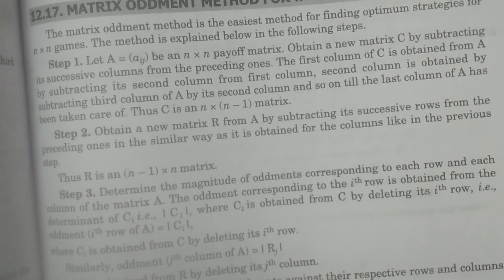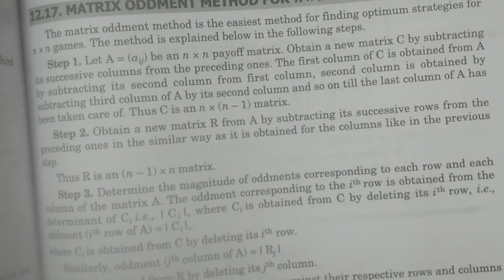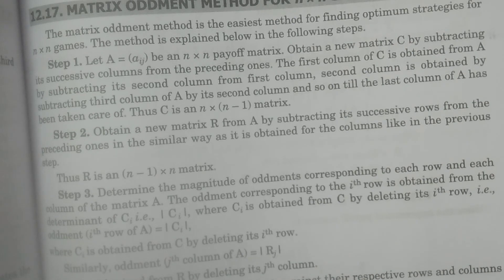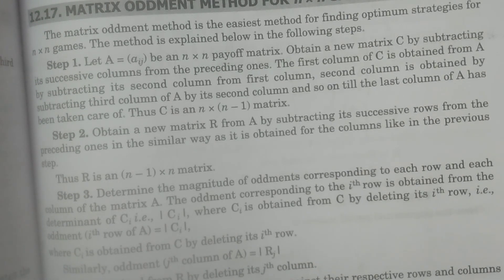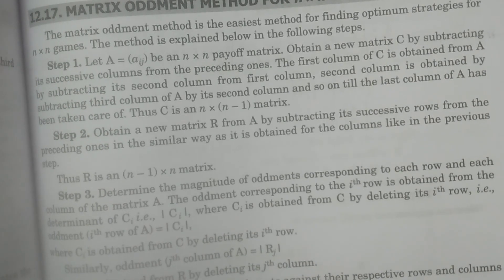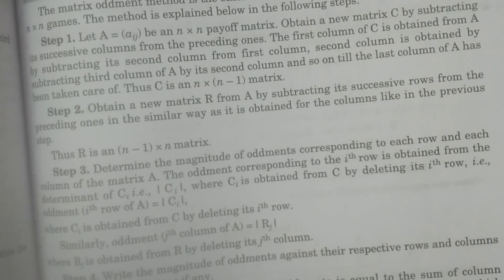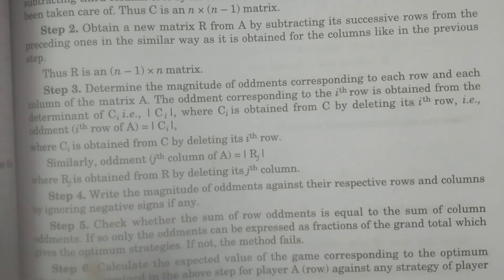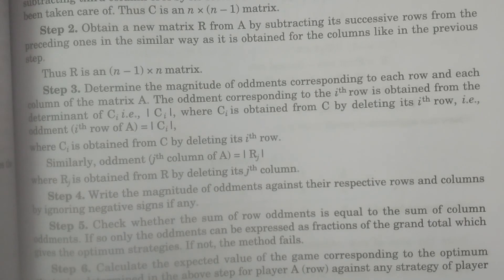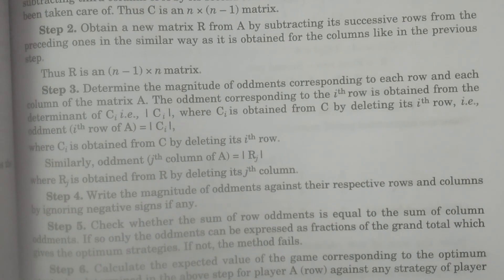Write the magnitude of oddments against their respective rows and columns. The magnitude is simply the absolute value — after calculating the determinant you get a value. For example, the determinant of a 2×2 matrix with elements 2, 4, 6, 8 is calculated as AD minus BC, giving you the determinant value, say 5 — that is the magnitude. In step 4, write the magnitude of oddments against their respective rows and columns by ignoring negative signs if any, using the modulus. This matrix is known as the augmented matrix.